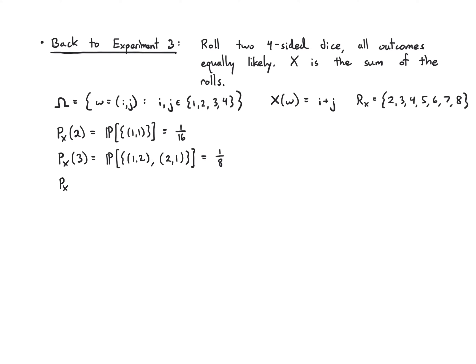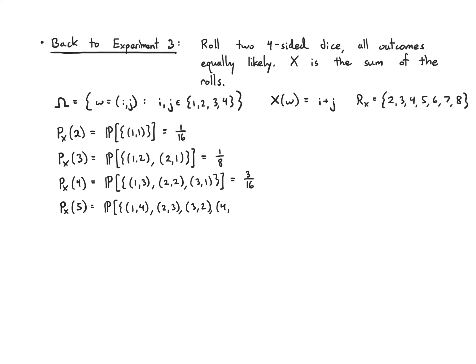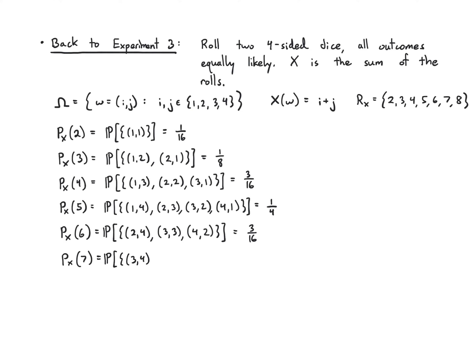The probability that X equals 4: pairs (1,3), (2,2), (3,1) — that's 3/16. For X equals 5: pairs (1,4), (2,3), (3,2), (4,1) — that's 4/16 = 1/4. For X equals 6: pairs (2,4), (3,3), (4,2) — that's 3/16. For X equals 7: pairs (3,4), (4,3) — that's 2/16 = 1/8. And for X equals 8: just (4,4) — that's 1/16. So we've calculated the full PMF, though in your own problems you don't need to write it out in this much detail.